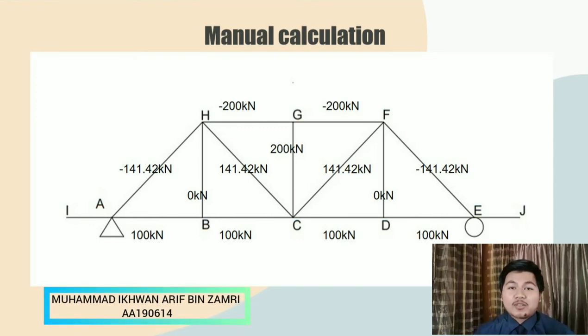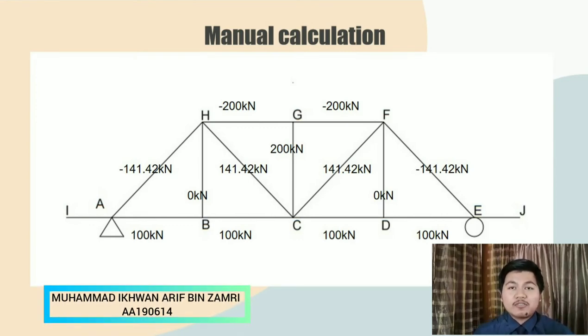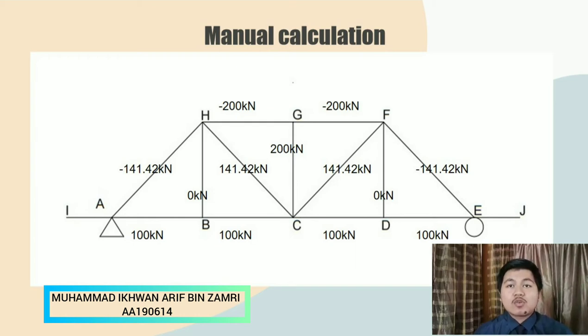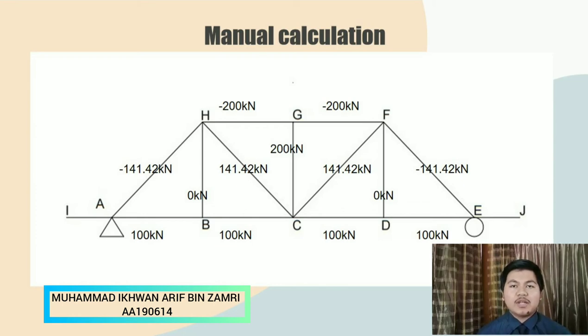Assalamualaikum warahmatullahi wabarakatuh. My name is Muhammad Ikhwan Arif bin Zamri from section 4 and I will present about the manual calculation for our group design model of bridge. So first we use 20 kilonewton per meter to overall length of the bridge which is 10 meter.